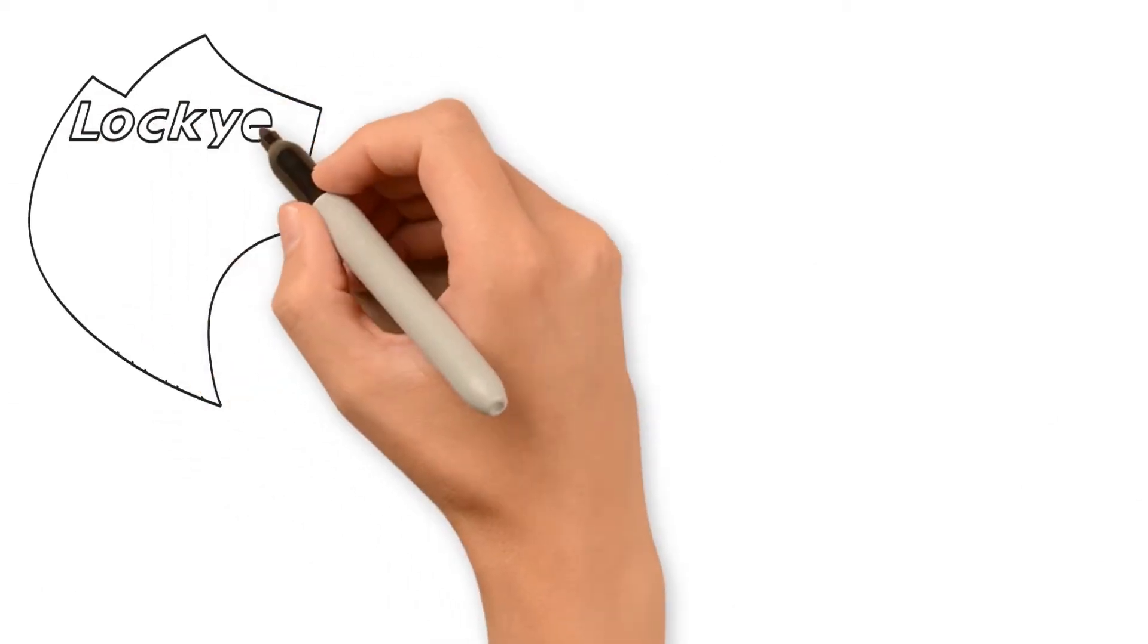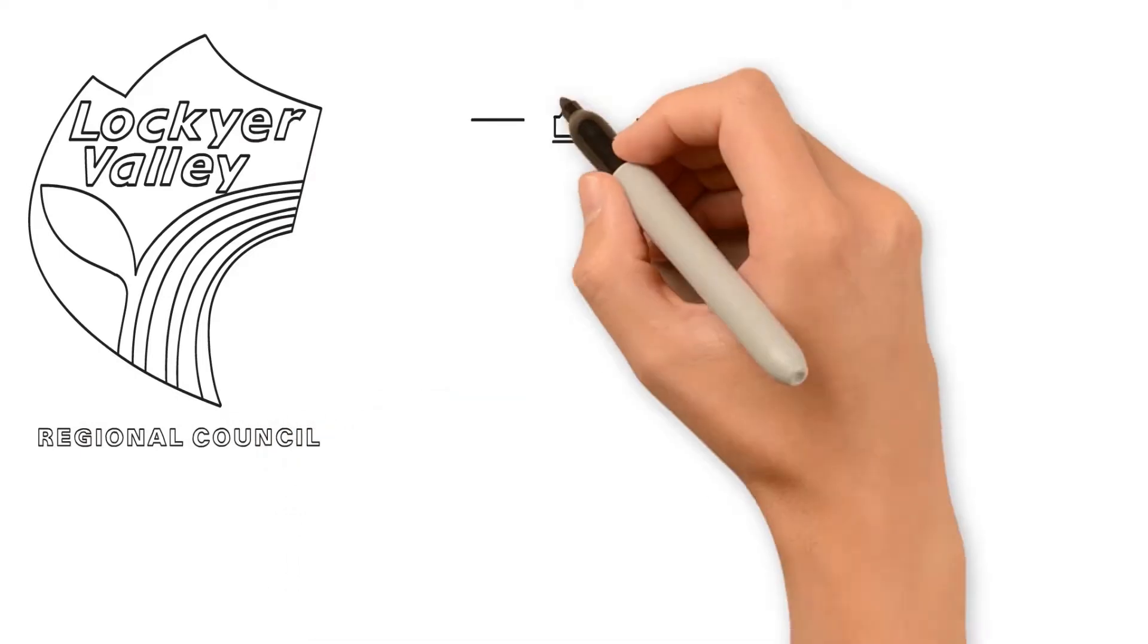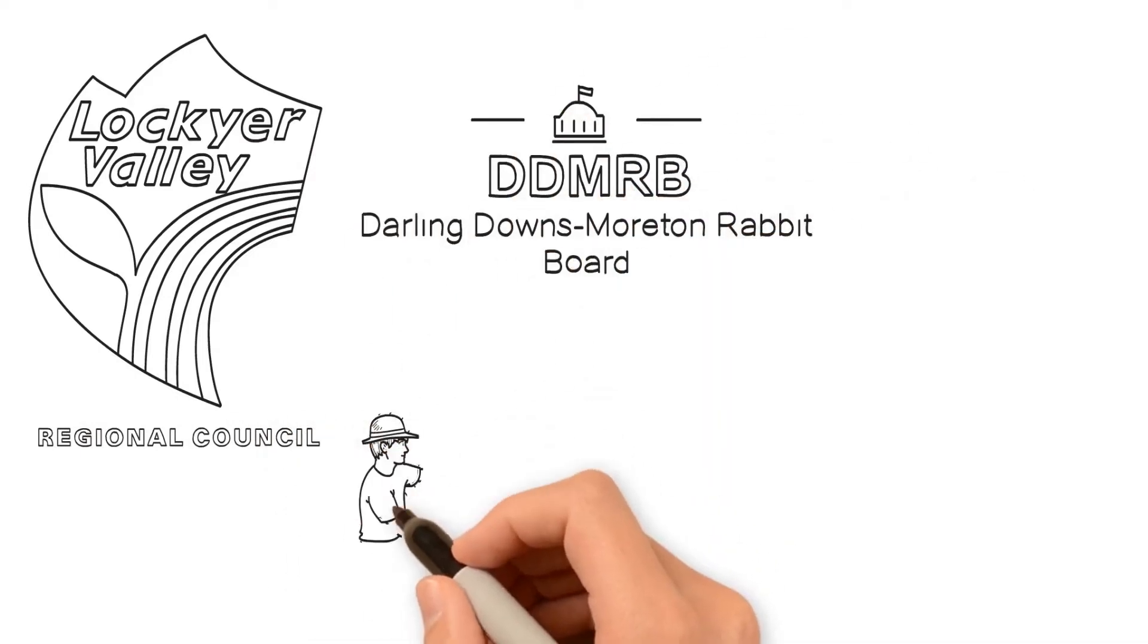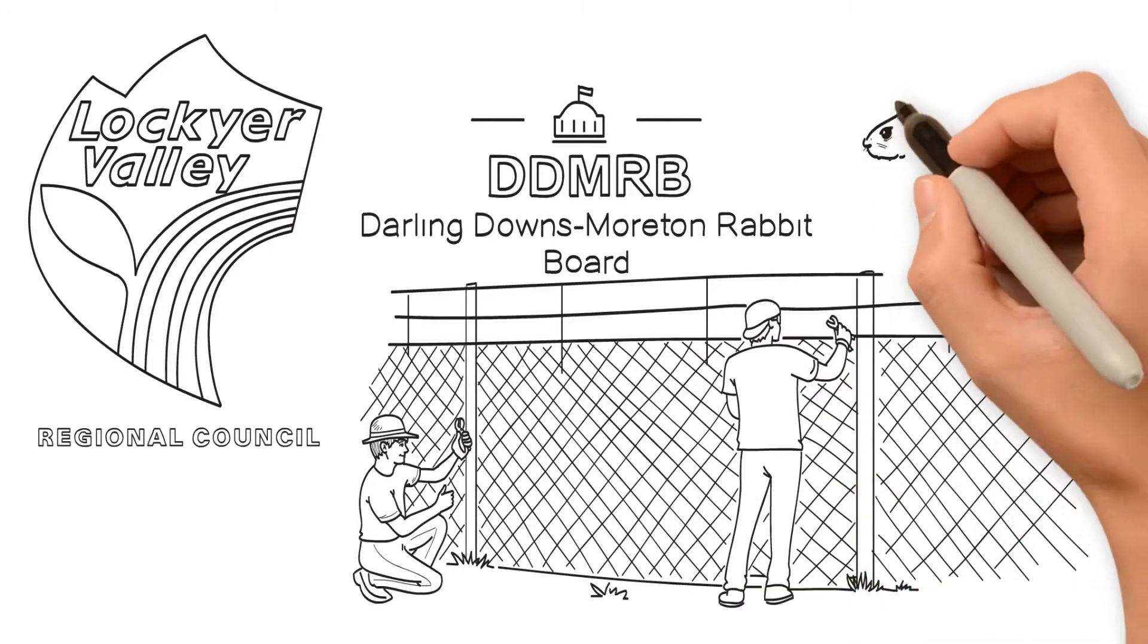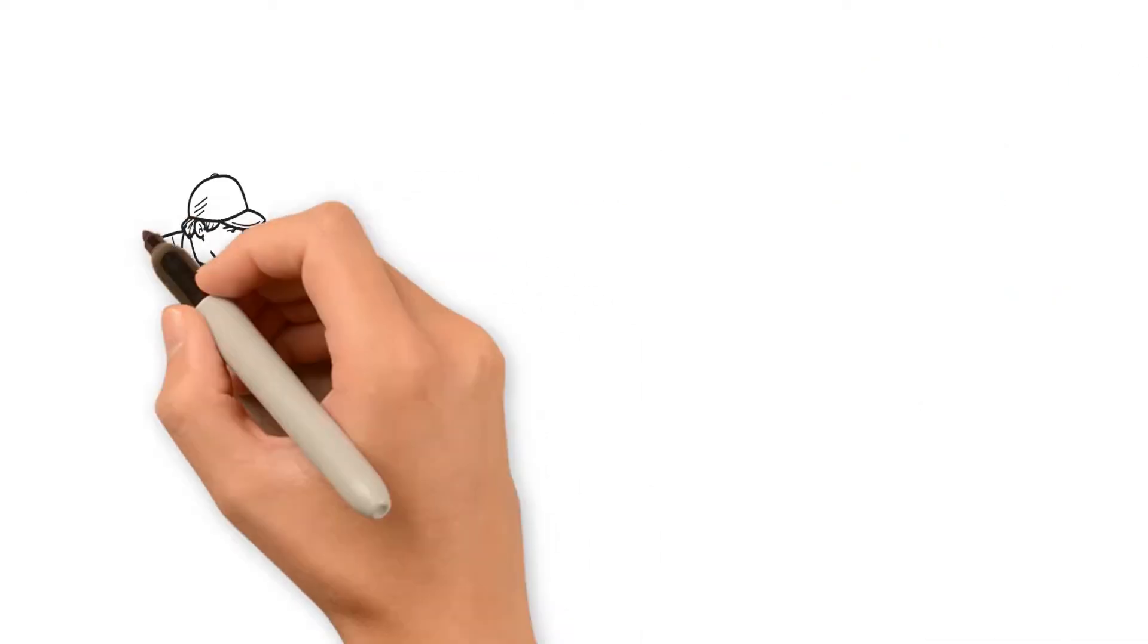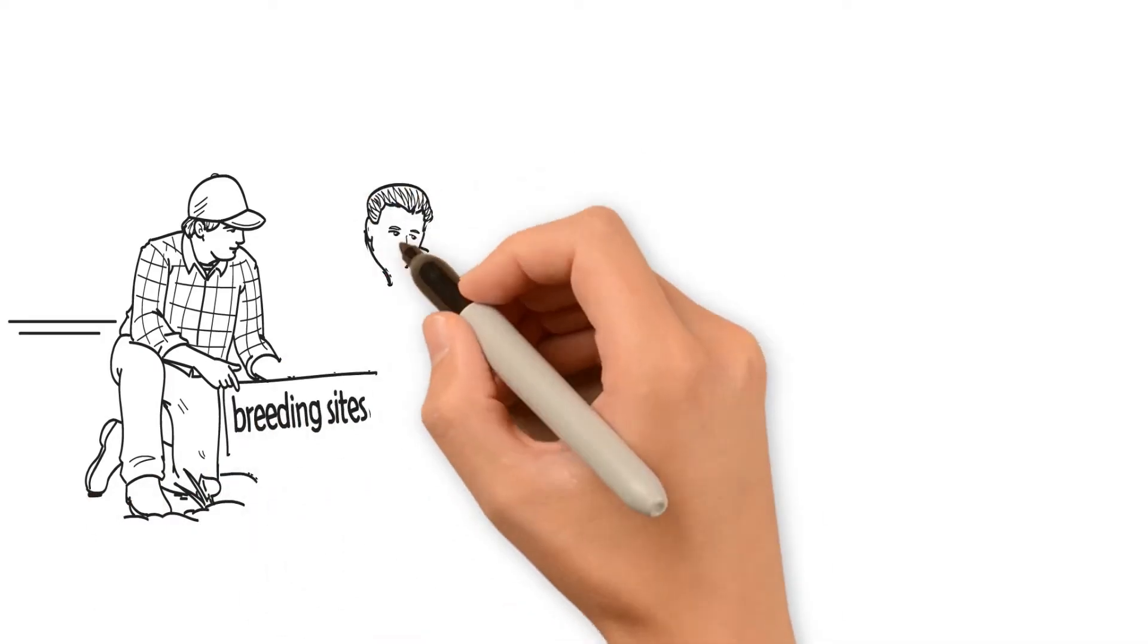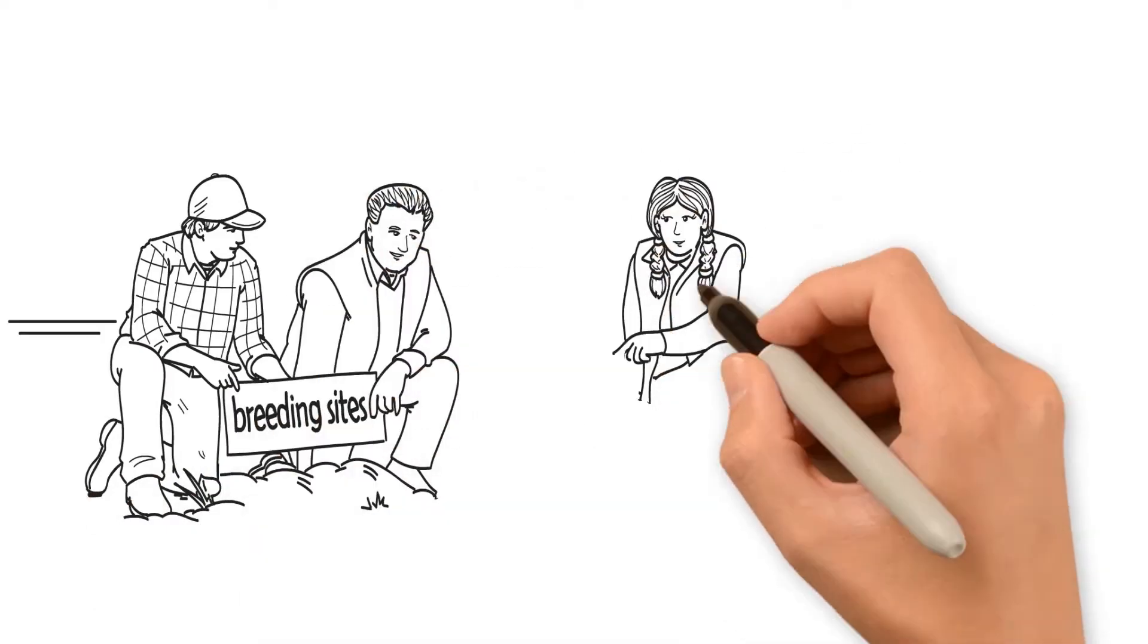What can be done? Lockyer Valley Regional Council works in close partnership with the Darling Downs Moreton Rabbit Board to assist local landholders in controlling the region's rabbit populations. The best way to prevent the damage from occurring is to prevent rabbits from establishing and spreading.